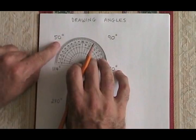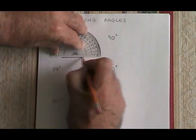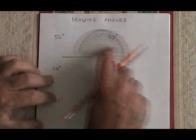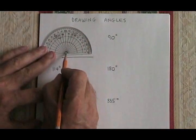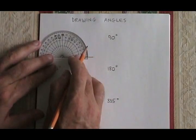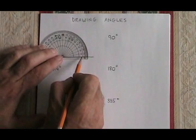The first angle I'm asked to draw is 50 degrees. I need to start by giving myself a straight line to draw from. Now that I have the straight line, I can zero my protractor using this dot on one end of the straight line that I drew.